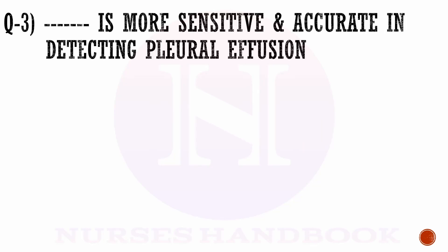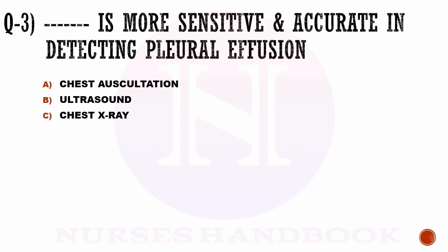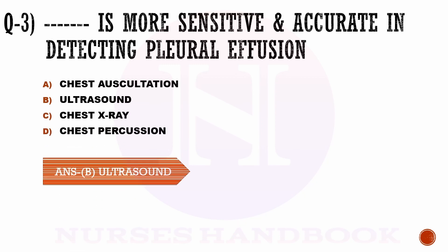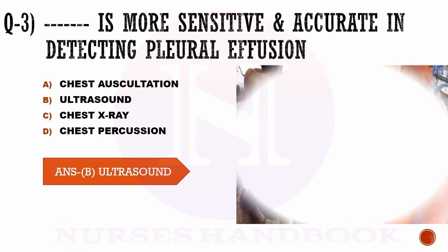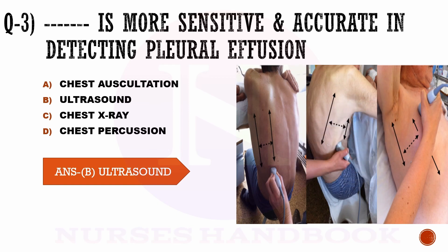Question number 3. Dash is more sensitive and accurate in detecting pleural effusion: options are a) chest auscultation, b) ultrasound, c) chest x-ray, and d) chest percussion. The correct answer is b, ultrasound. Other methods also help in detecting pleural effusion, but the best and most accurate method is by ultrasound.